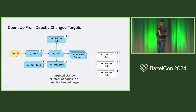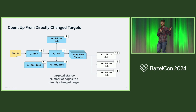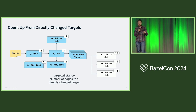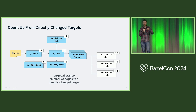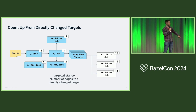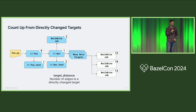Once we know a target is directly changed, we go back to the build graph and say: all directly changed targets have a target distance of zero, where target distance is the number of edges to a directly changed target — the number of hops in the build graph. Then we walk the graph and count upwards. Any BuildKite jobs triggered due to a change to a target with a very high target distance, we simply skip.